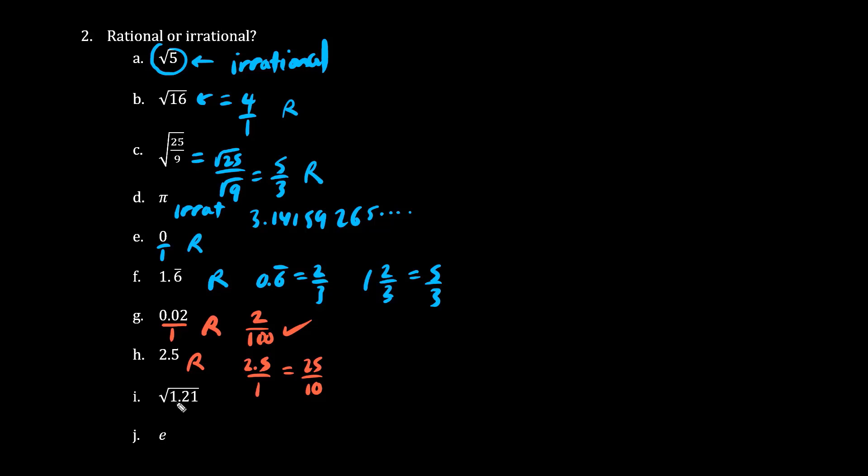Now, what times what is 121? 11 times 11 is 121. It's good to memorize your times tables. So 1.1 times 1.1 is 1.21. That's the inside of this radical symbol, the radicand. So the answer is 1.1. 1.1 divided by 1, multiplying top and bottom by 10, we have 11 over 10, which is rational.